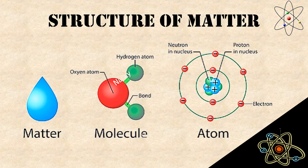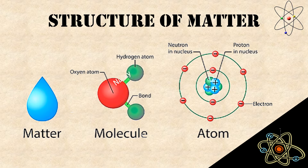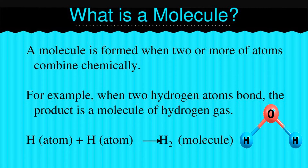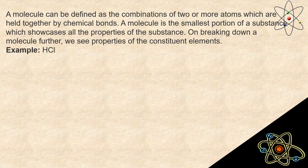Let us understand the structure of matter first and then we will continue with atoms. If I take a droplet of water, that is matter. Matter has various molecules in it. If you break down matter, you will find molecules. Like water has hydrogen and oxygen atoms forming a molecule. This molecule can further be divided into atoms. A molecule is formed when two or more atoms combine chemically. For example, a hydrogen atom bonds with another hydrogen atom and forms hydrogen gas.